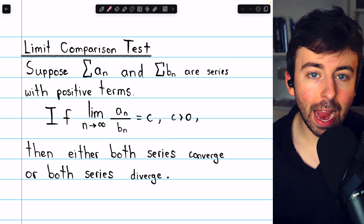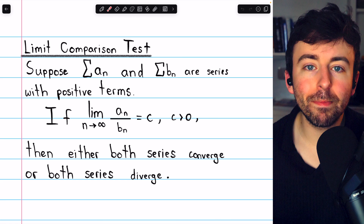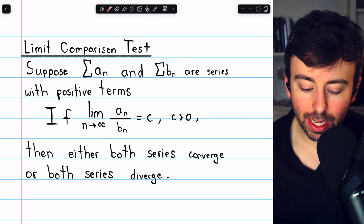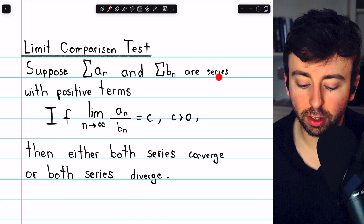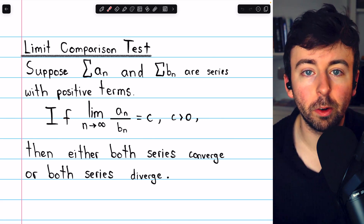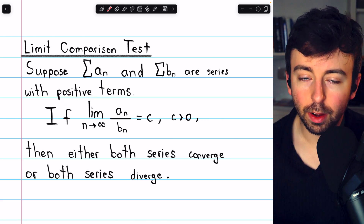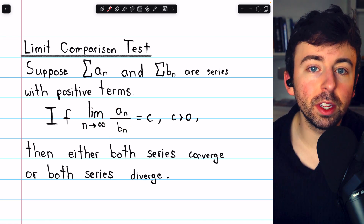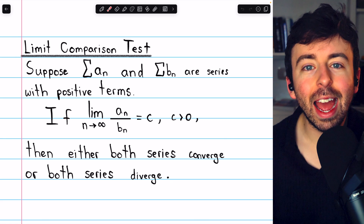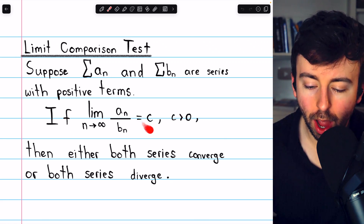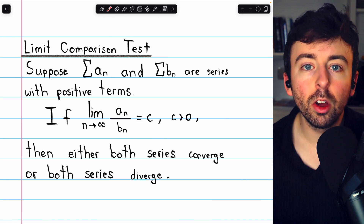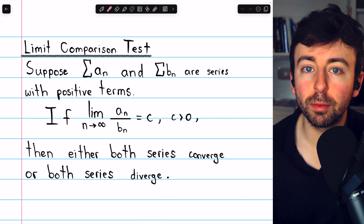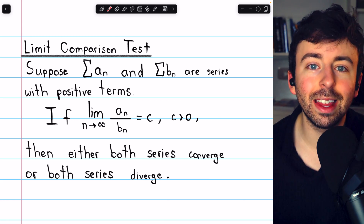Instead of the comparison test where we compare the terms of two series directly, in the limit comparison test — which also applies only to series with positive terms — we look at the limit of the ratio of the terms of two series. If that limit is some positive finite number, we know that the behavior of the two series must be the same: they must both converge or they must both diverge.